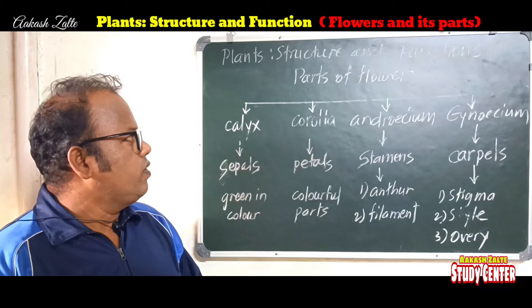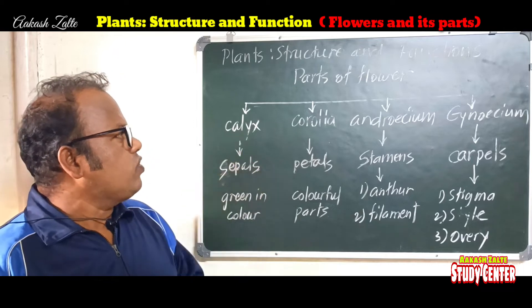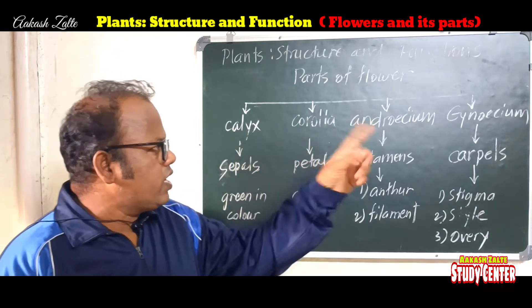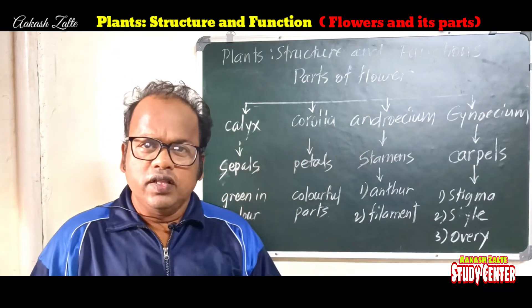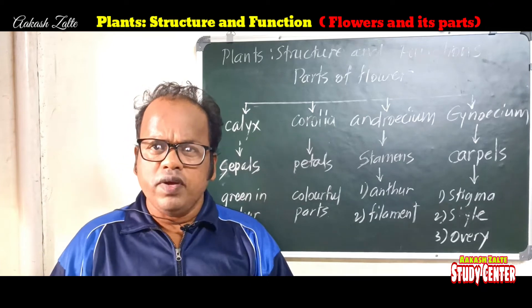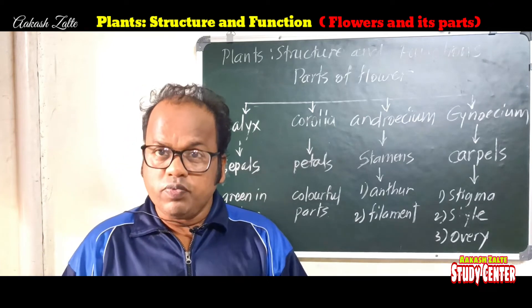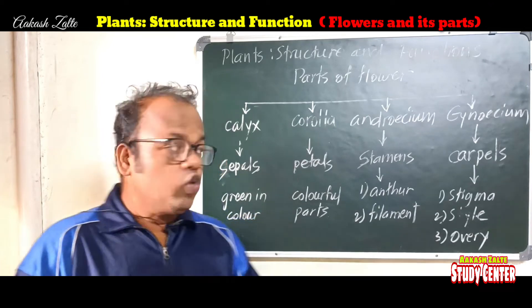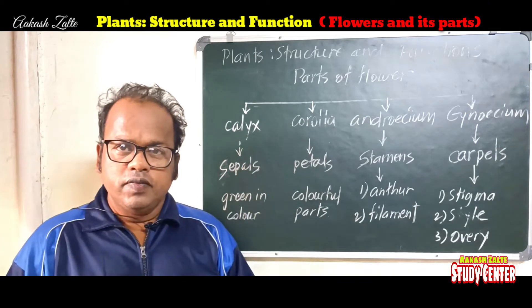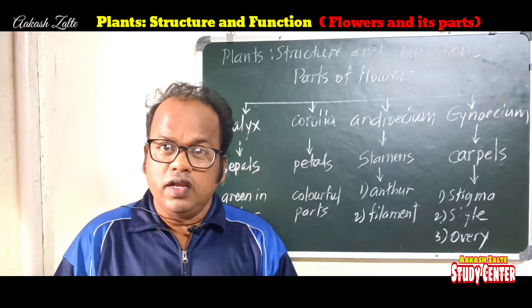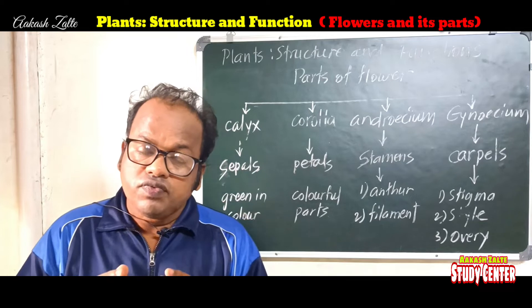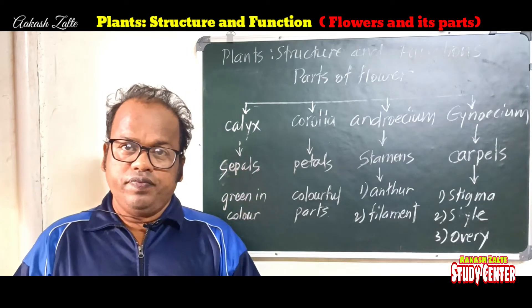Flower — parts of flower: calyx, corolla, androsium and gynosium. These are the main 4 parts of any flower. But first of all, before going to these parts, let's study about where the flower is attached to the stem.